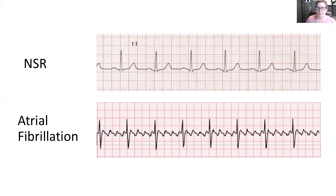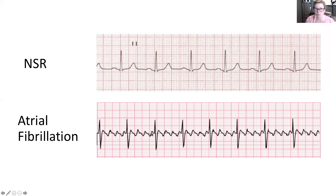We would count how many of these saw teeth we see in between each QRS complex — one, two, three, four — and we would mark this as a four-to-one conduction: four P waves to every QRS.